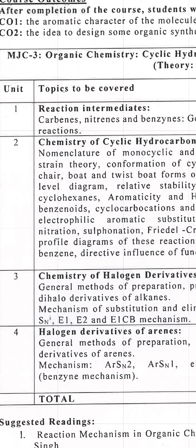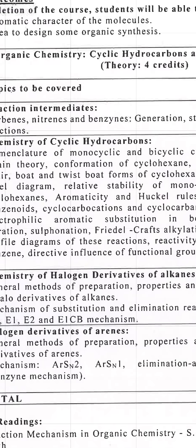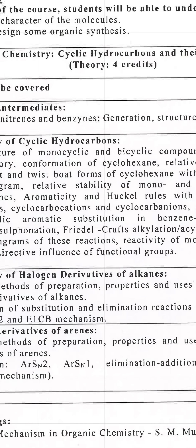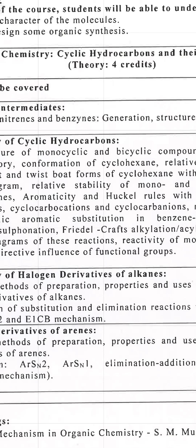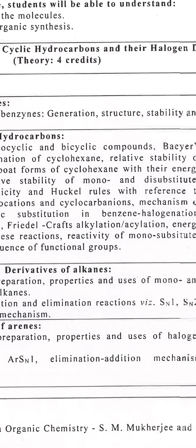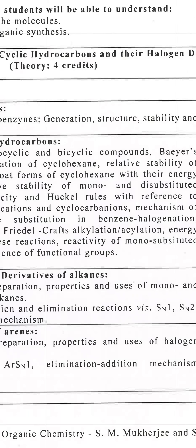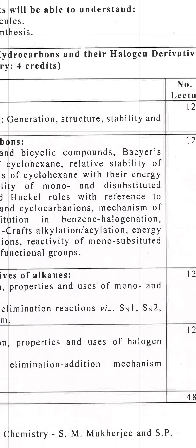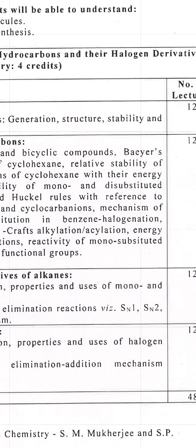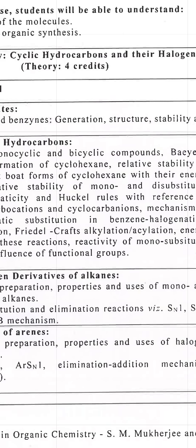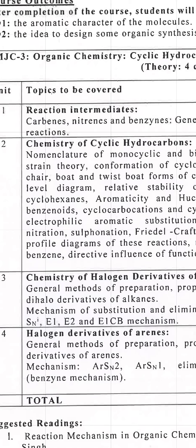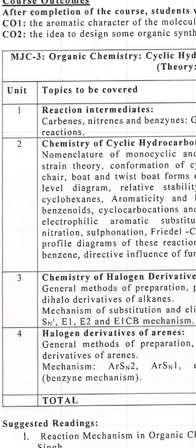Carbene has 2 electrons of different nature — singlet carbene and triplet carbene. Benzyne is also a related intermediate. We will study how benzyne is formed, its structure, stability, and reactions.